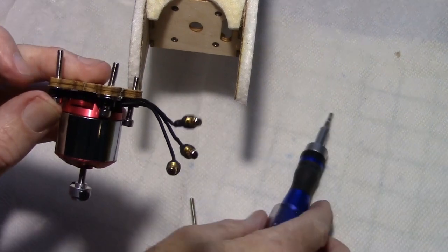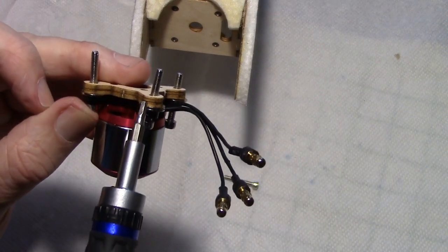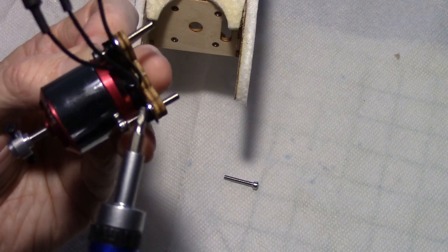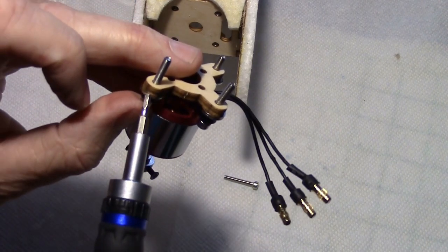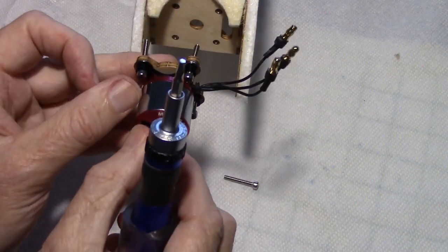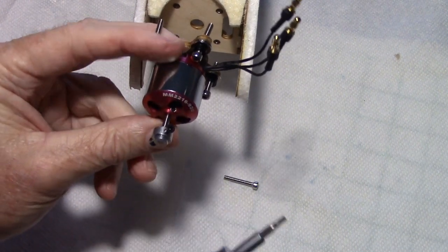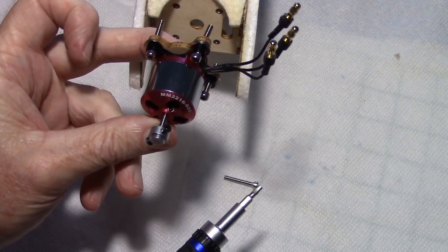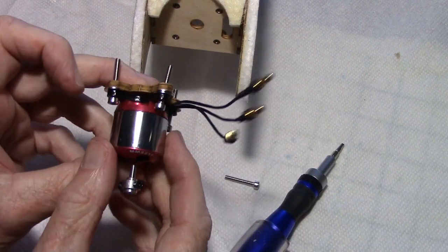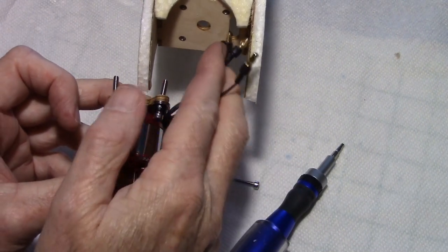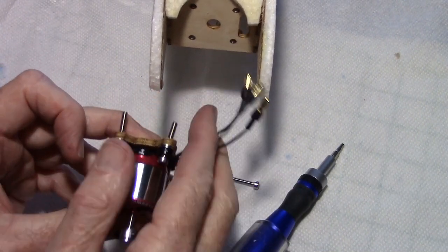Now I'm just putting the supplied prop saver on the end of the shaft and using Loctite to secure the two screws that hold the rubber band and the prop saver onto the shaft. I used some washers between the aluminum motor mount and the plywood spacers to give the motor some right angle and down angle thrust.